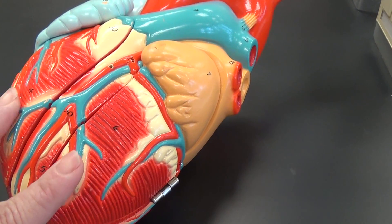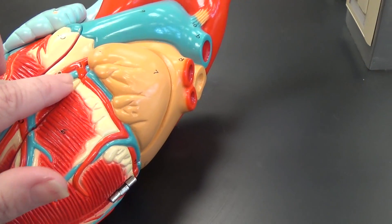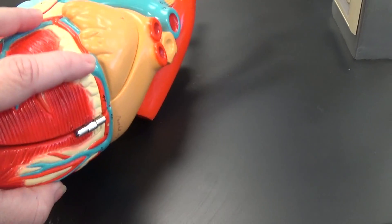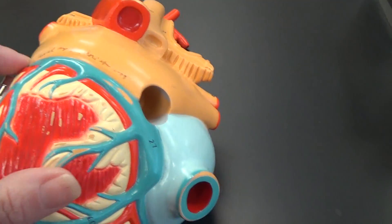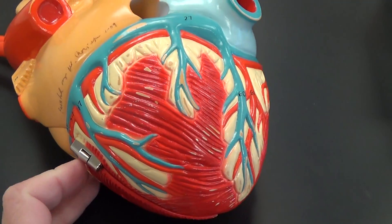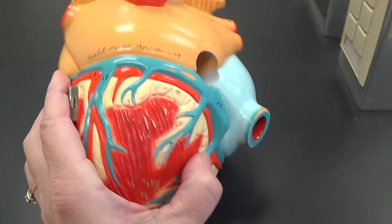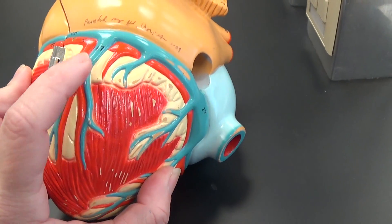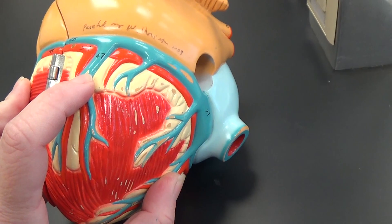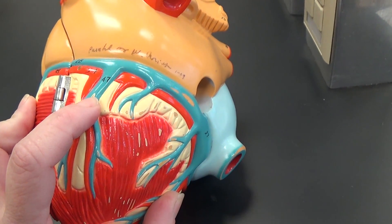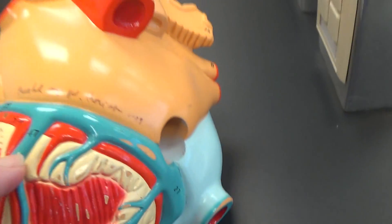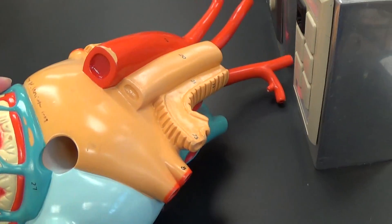The vein that you see forming here, this is the great cardiac vein, and it flows around with the circumflex artery towards the coronary sinus. One other vein that we should pay attention to is on the posterior side of the heart, and notice it's pretty close to that hinge right there. This is the posterior vein of the left ventricle, and that will flow into the great cardiac vein.